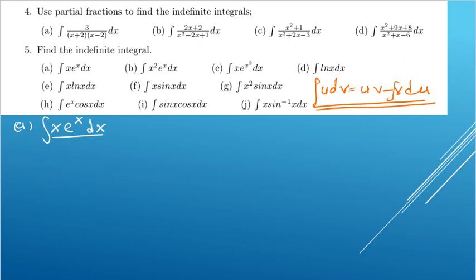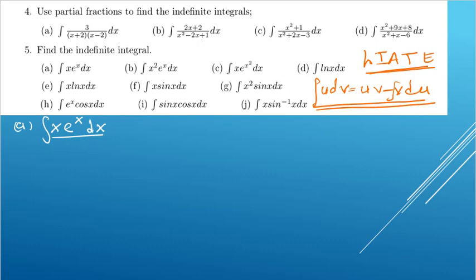LIATE stands for: L for Logarithm, I for Inverse trigonometric, A for Algebra, T for Trigonometry, and E for Exponential functions. This is the order of priority. In this case, algebra comes before exponential, so u is equated to the algebraic term x, and du equals dx.